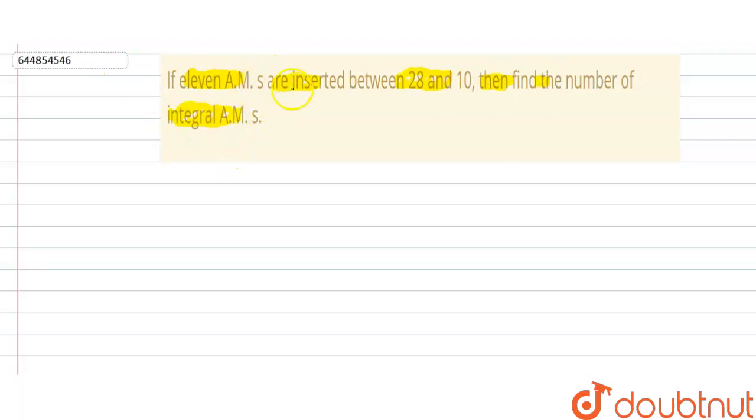We are given that 11 arithmetic means are inserted between 28 and 10, so we'll get: 28, a₁, a₂, a₃, up to a₁₁, and last term is 10. As you can see, this is the first term, this will be 12th term, and this will be 13th term.